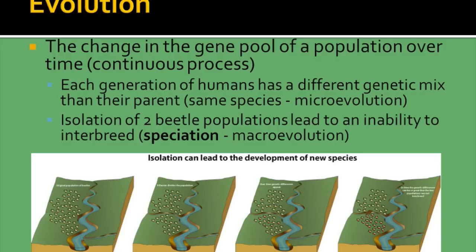The diagram at the bottom shows the development of a new species. You can see the entire original population on the left side of the river. As that river meanders through, it's eventually going to cut that original population in half, becoming a barrier so they can no longer interbreed. Over time this makes up a new species, because each population can no longer produce fertile offspring with the other, creating their own species and eventually their own genetic traits.